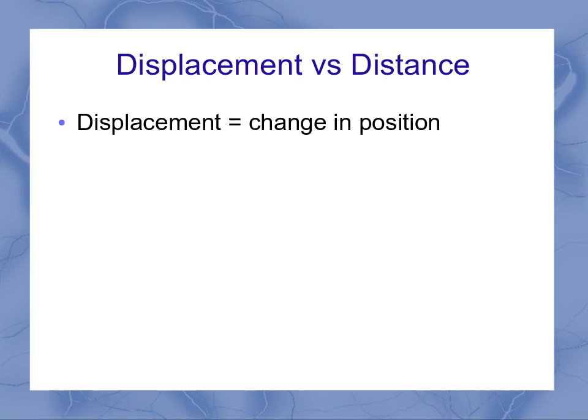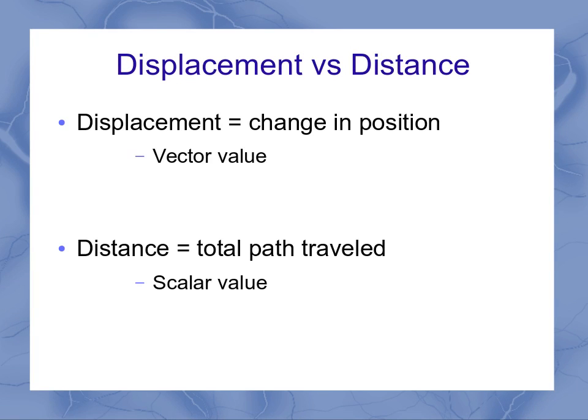When I talk about displacement, that's my change in position that I've been studying. Distance is just the total path traveled. Displacement is a vector because it matters which direction I go in when I change my position. The distance is a scalar. It only matters how far I went, not which direction.